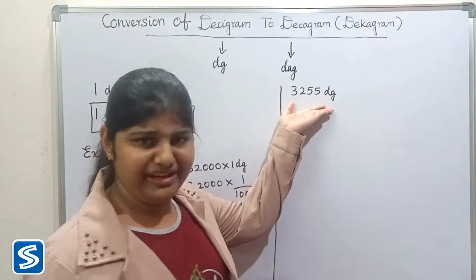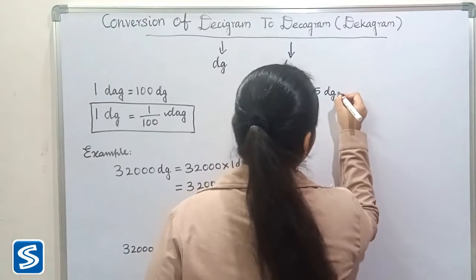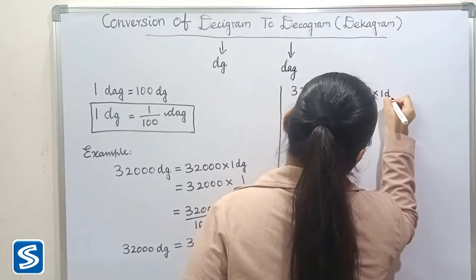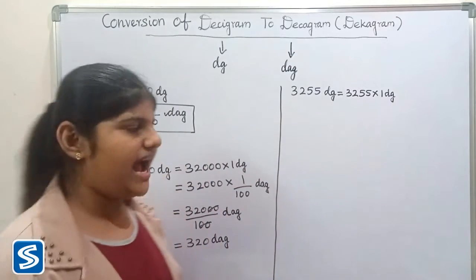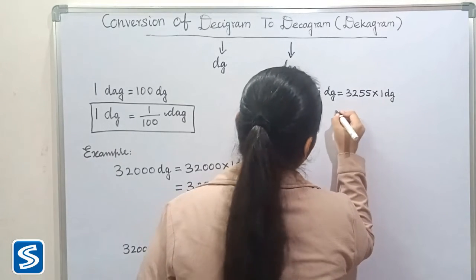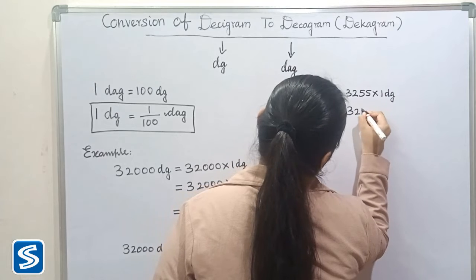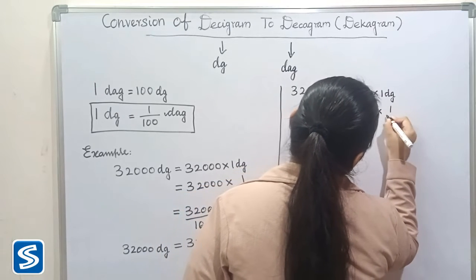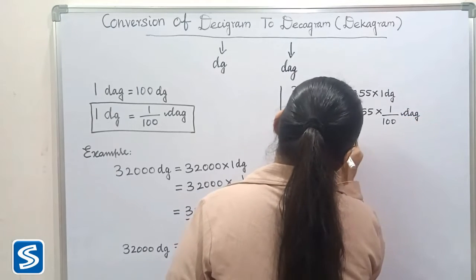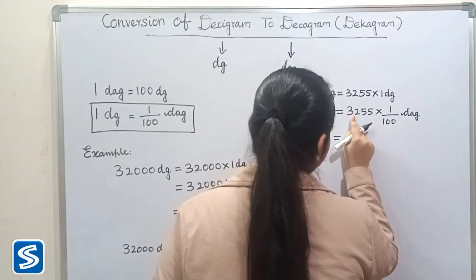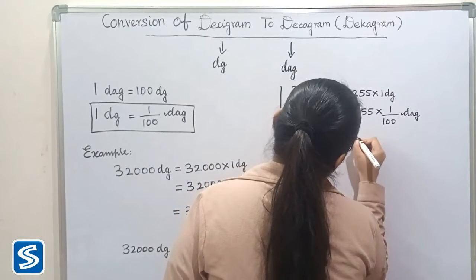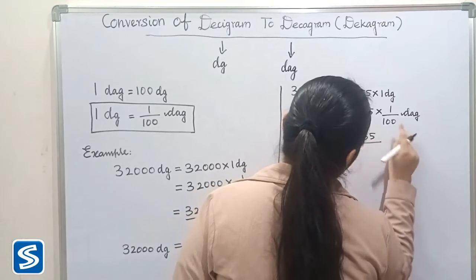3,255 desigrams can be written as 3,255 multiplied by 1 desigram. So now we have to substitute 1 by 100 decagrams in the place of 1 desigram. So 3,255 multiplied by 1 by 100 decagrams. 3,255 multiplied by 1 will be 3,255, so 3,255 by 100 decagrams.